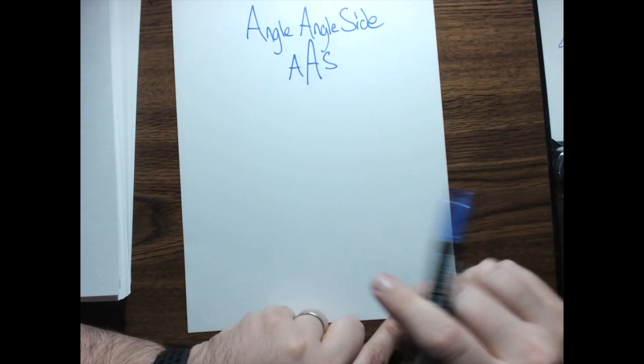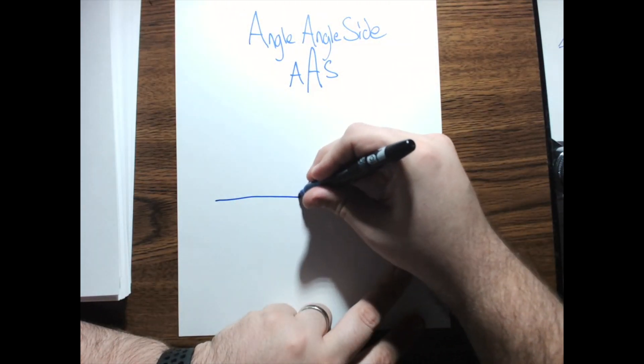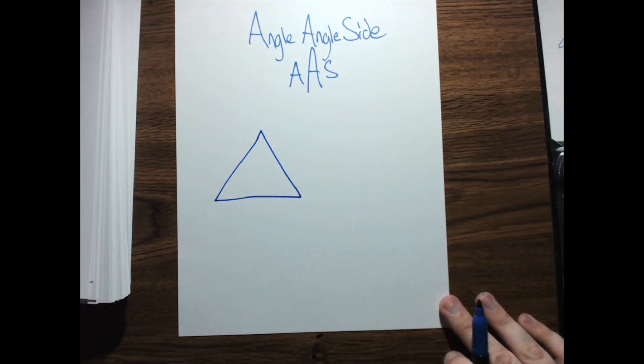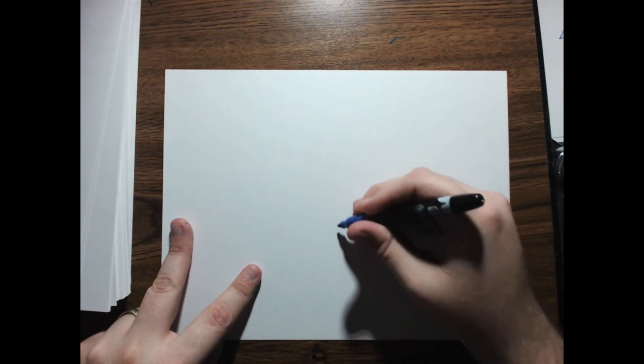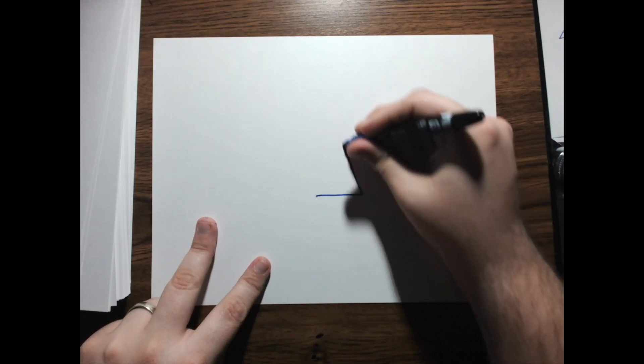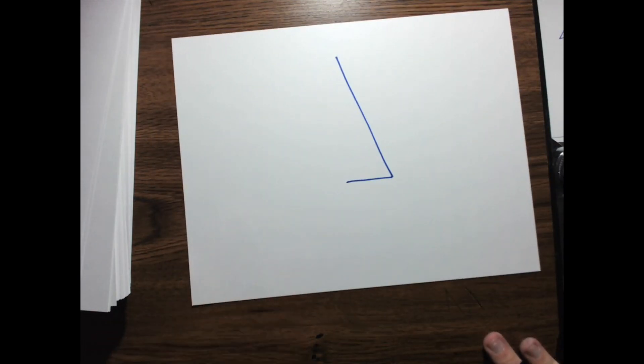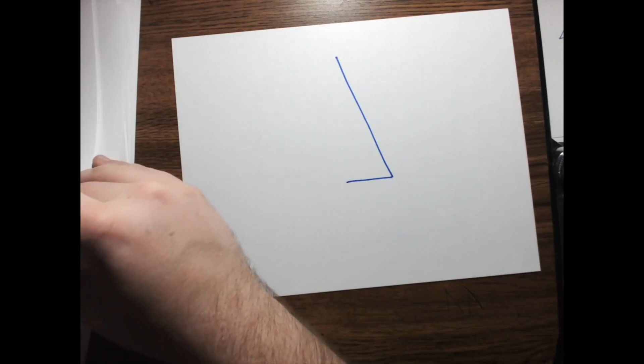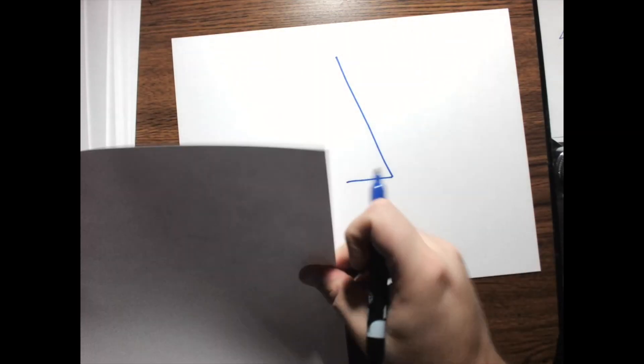But, now let's talk about what happens when it's not included. And then we're going to do that by talking about angle, angle, side. So, with angle, angle, side, the idea is this. You know what, before we actually do that, let me give you an example of why this works. So, here we go.